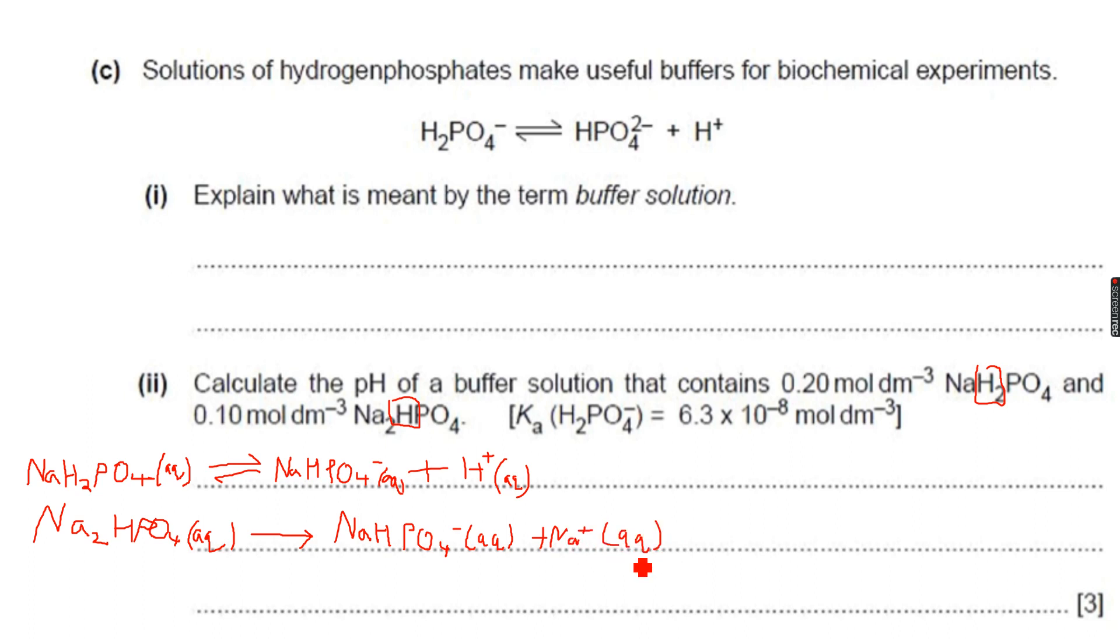So now I have my weak acid which is NaH2PO4 and I have my conjugate base which is NaHPO4-. So my weak acid and my conjugate base, I have excess solution, excess supply of this.